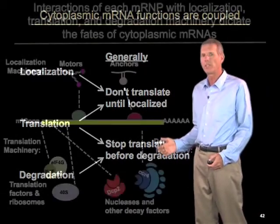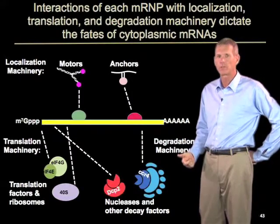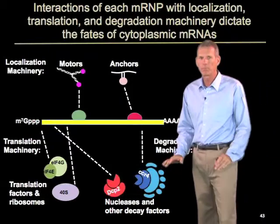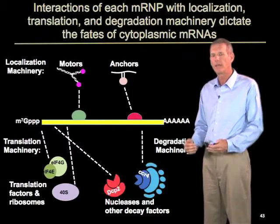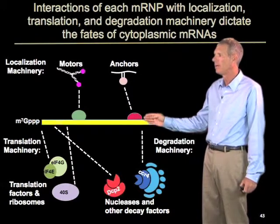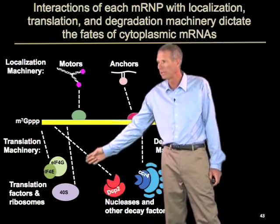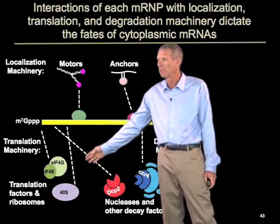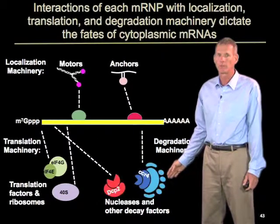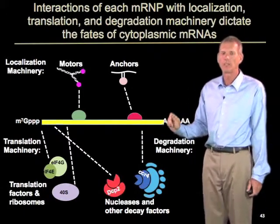An important question then is to try to understand how the fates of different mRNAs are controlled to give different types of localization, different types of translation, and different rates of degradation. At the simplest level, we can think about this as how the mRNA interacts with different machines in the cell. Localization is going to be dictated by how the mRNA and the proteins associated with it interact with motors and anchors in the cell. How well the mRNA translates will be influenced by how well it interacts with translation factors, either directly or indirectly. And how well it degrades is going to be influenced by its interaction with the degradation machinery. So an important principle is how mRNAs interact with these different machines, and how that differs between different messages.